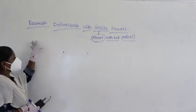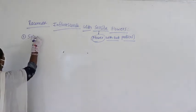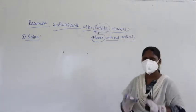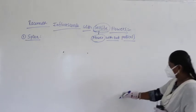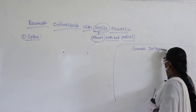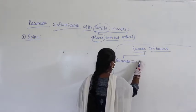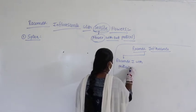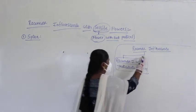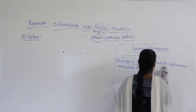Now we are going to discuss the types of racimose inflorescence with sessile flowers. Let us take the first one — spike. Before we discuss racimose inflorescence with sessile flowers, let me give clarity to avoid confusion. When we take racimose inflorescence, we classify it into two categories: racimose inflorescence with pedicillate flowers, and racimose inflorescence with sessile flowers.